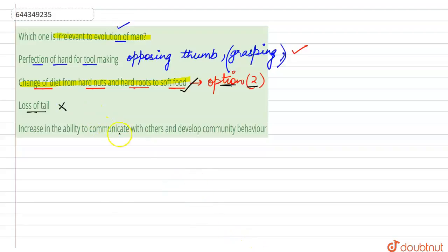The fourth one is the increase in the ability to communicate with others and develop community behavior. This is also the right statement. Early man was not able to communicate much with other community members and community behavior did not develop initially, but it slowly developed during the evolution of man.